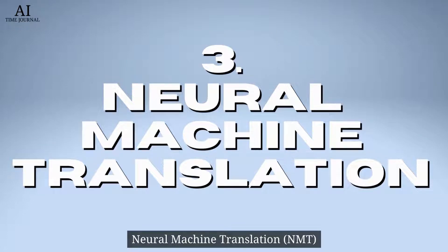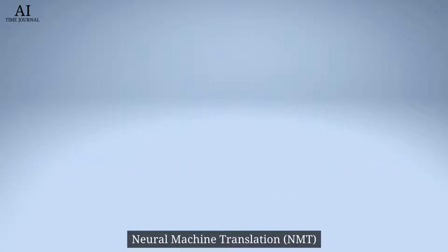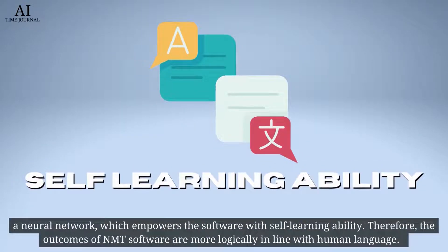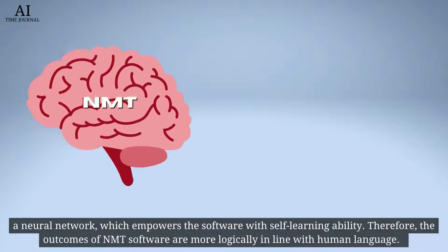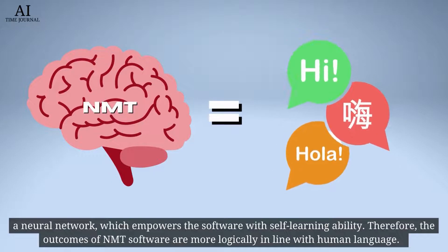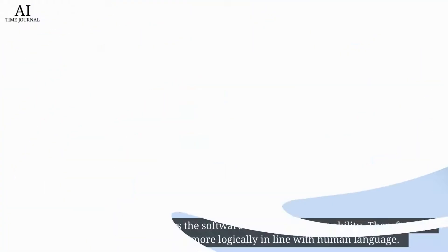Neural machine translation uses a neural network which empowers the software with self-learning ability. Therefore, the outcomes of NMT software are more logically in line with human language.